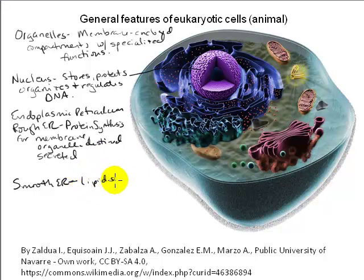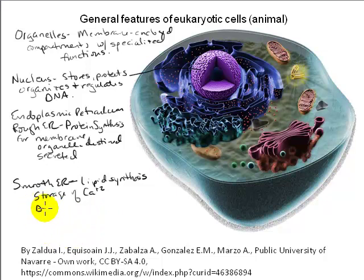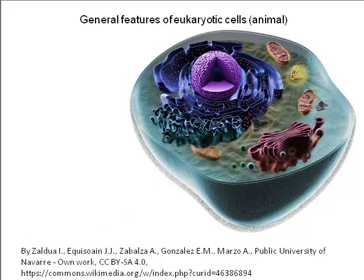Smooth ER contains enzymes that synthesize lipids — things like membrane phospholipids, cholesterol, and the steroid hormones derived from cholesterol. In some cell types, smooth ER takes on additional specialized functions: it stores calcium that can be released in regulated fashion under stimulation — we saw an example of this in muscle cell contraction. In liver cells, detoxification enzymes are held in smooth ER, making it critically important for the liver's ability to break down or chemically modify potentially harmful substances.